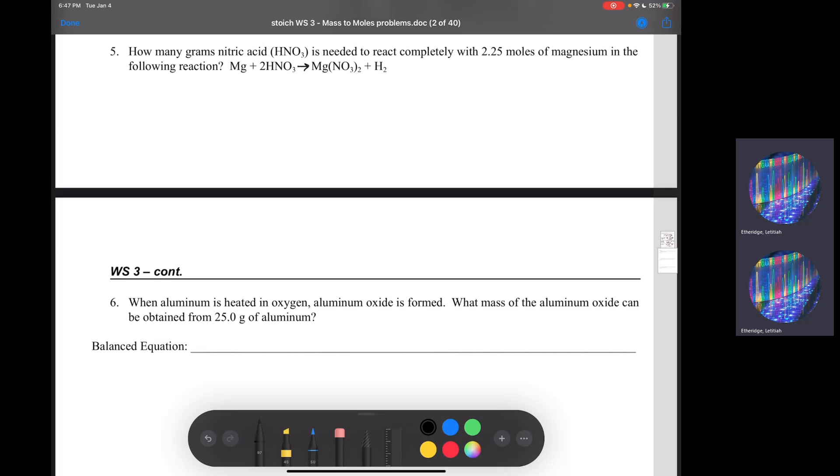So right here, you have how many grams of nitric acid is needed to react completely with 2.25 moles of magnesium in the following reaction. So you're starting with moles of magnesium and want to know how many grams of nitric acid are going to be needed.